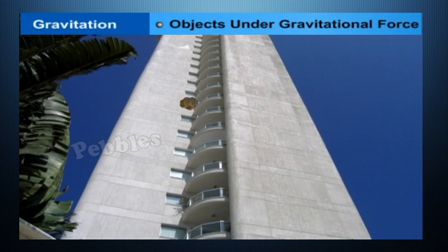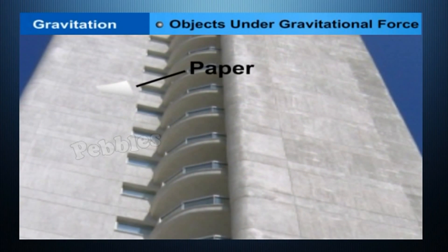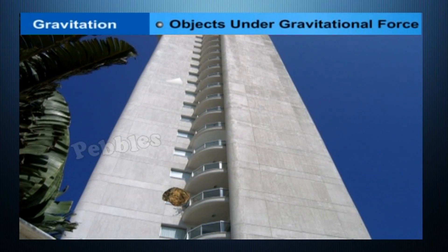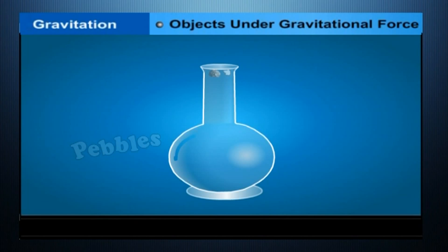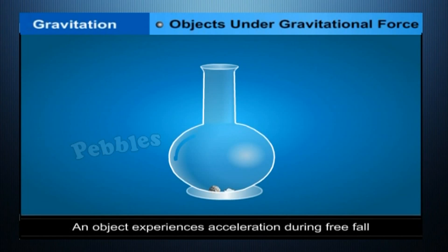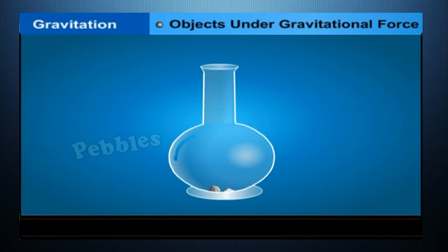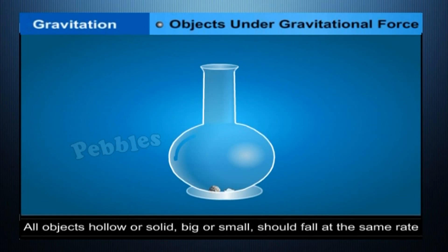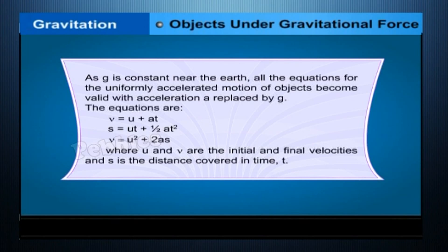Take a sheet of paper and a stone and drop them simultaneously from the first floor of a building. Observe whether both of them reach the ground simultaneously. We see that the paper reaches the ground a little later than the stone. If we do the experiment in a glass jar from which air has been sucked out, the paper and the stone would fall at the same rate. An object experiences acceleration during free fall, and this acceleration is independent of its mass. This means all objects — hollow or solid, big or small — should fall at the same rate.